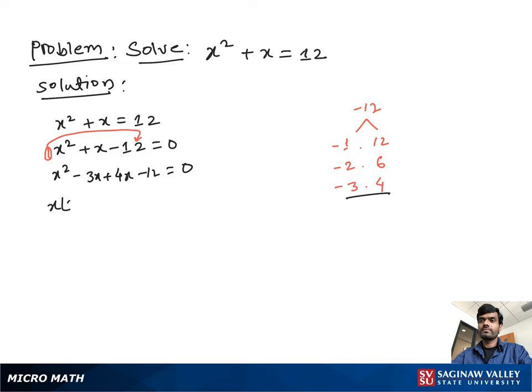From this pair we take out x as a common, so we have x minus 3. From this pair take out positive 4 as a common, so we have x minus 3, all equal to 0. Now from both sides we take out x minus 3 as a common, we have x plus 4, all these terms equal to 0.